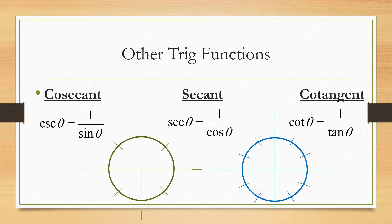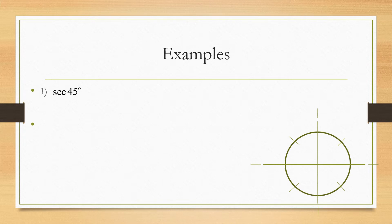So whatever you get for tangent, just flip the fraction around. We also have two unit circles — one in green and one in blue. The green one is used for 45-45-90 degree triangles, and in radians, anything over four. The blue one is used for 30-60-90 right triangles, or in radians, anything over six like pi over six or two pi over six. Let's go ahead and do some examples in degrees.